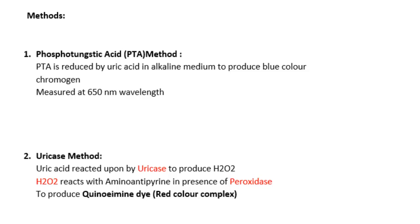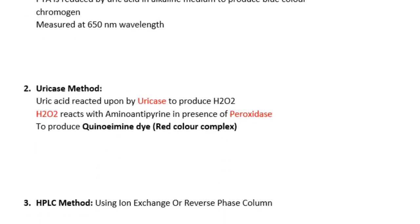The most commonly used method is the uricase method, measured at a wavelength of 505 nm. Here, uricase acts upon uric acid to produce allantoin, carbon dioxide, and hydrogen peroxide. The hydrogen peroxide then reacts with 4-aminoantipyrin dye in the presence of peroxidase to produce a red color quinoimine dye, which is measured photometrically at 505 nm.